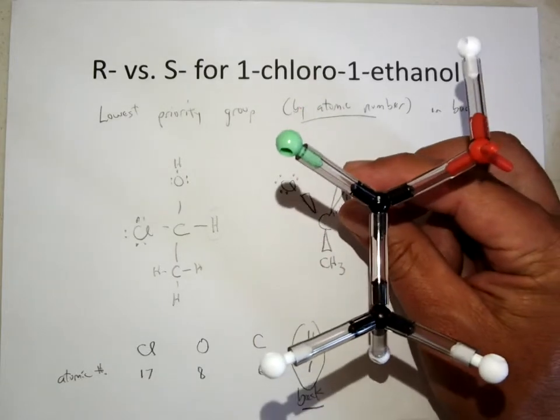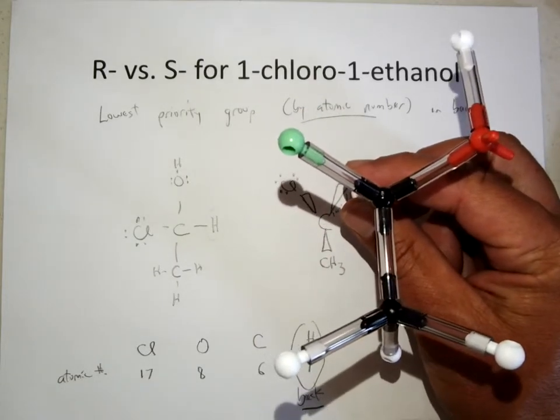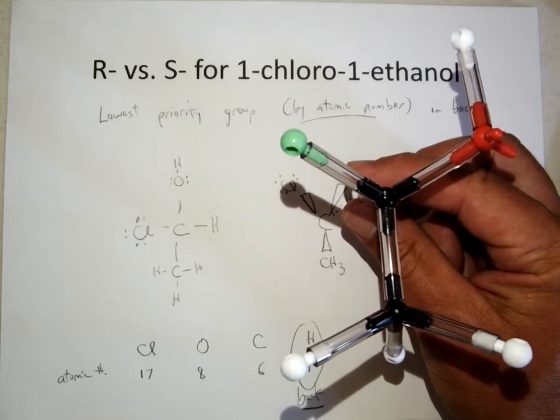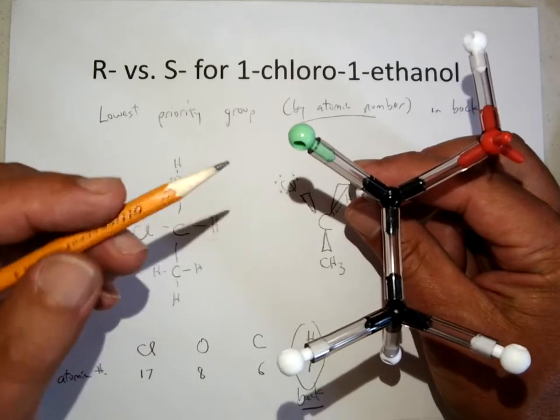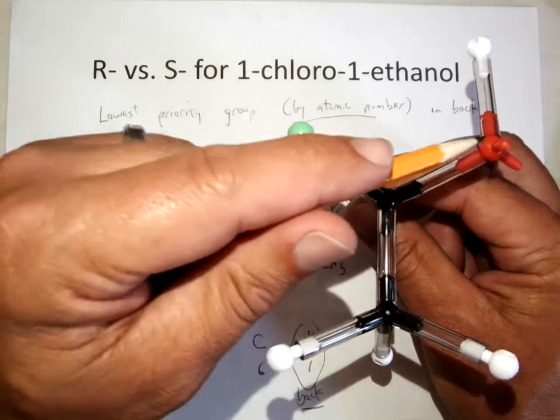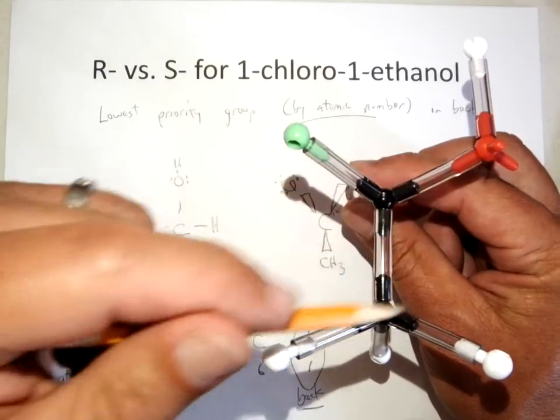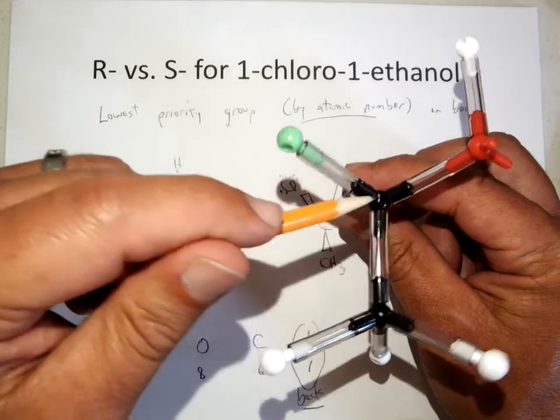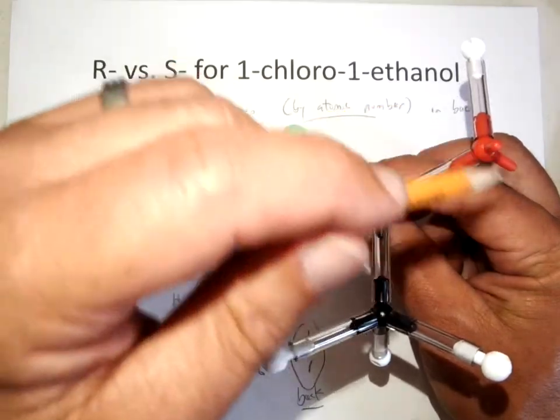And so if there is a hydrogen in your molecule, you put that in back. And now you look at the relative orientation of the chlorine, which is number 1, the oxygen, which is number 2, and the carbon, which is number 3.